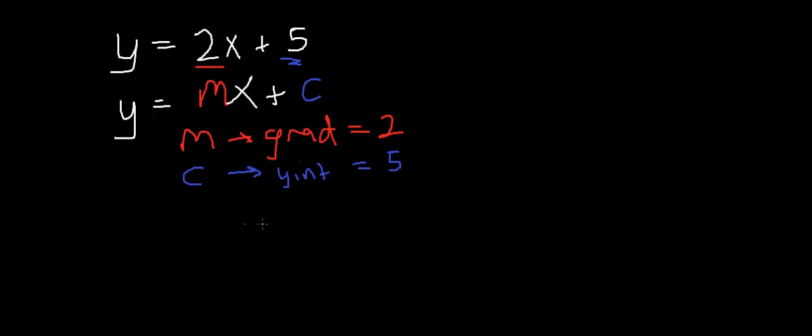We actually do have enough information to sketch a line because we have one point and a gradient. However, it's usually a lot easier to find the x-intercept too. Now, the x-intercept occurs when y equals 0, and if you think about that, it does make sense.